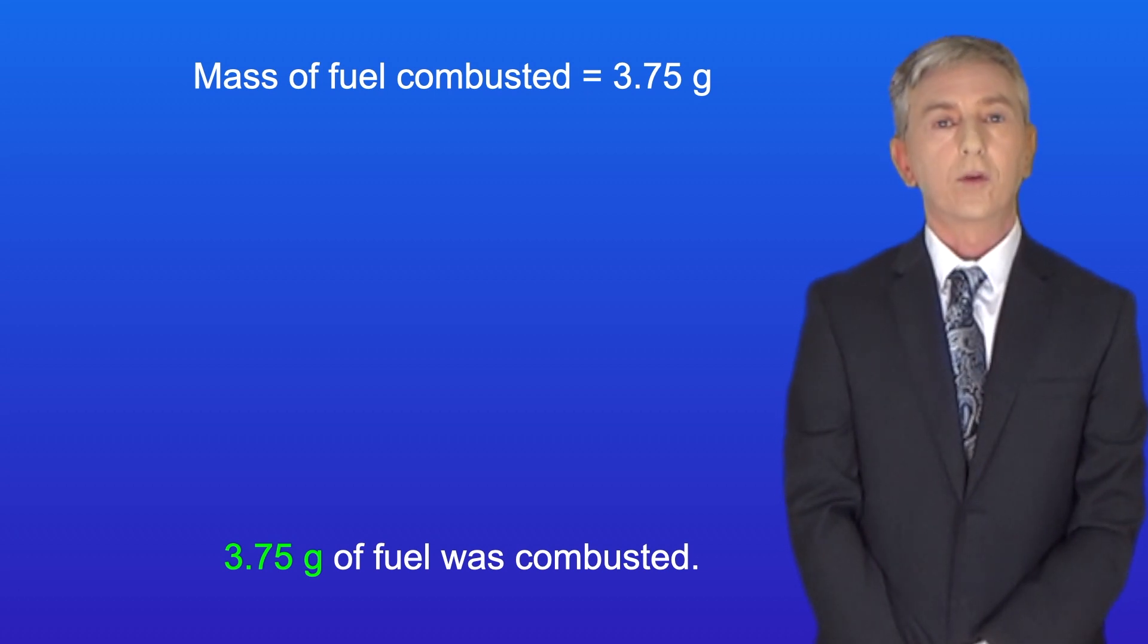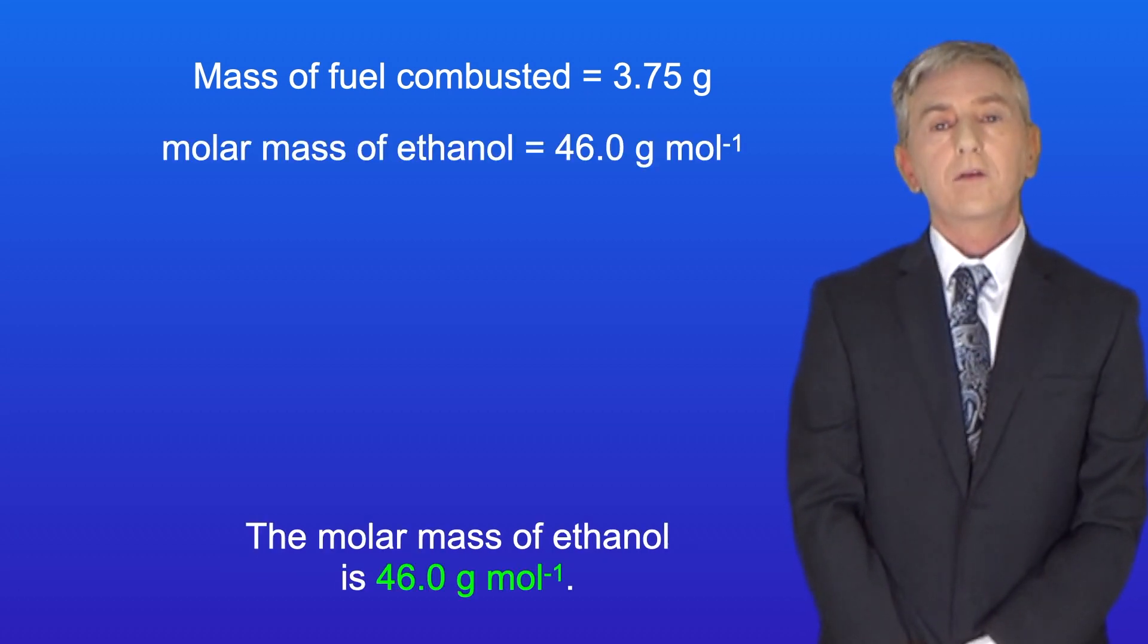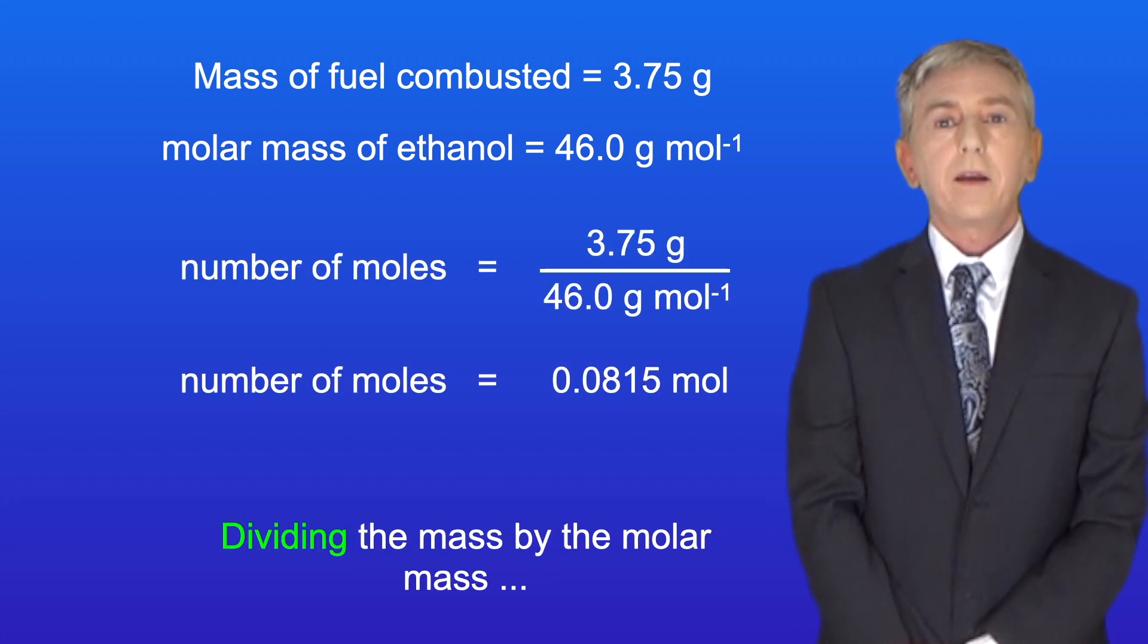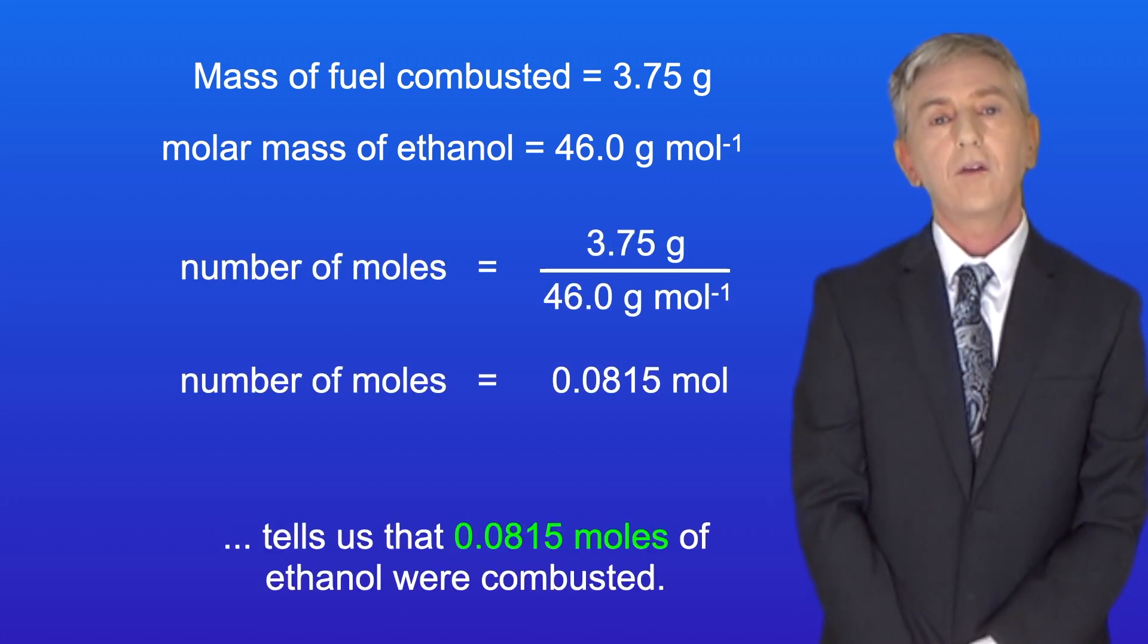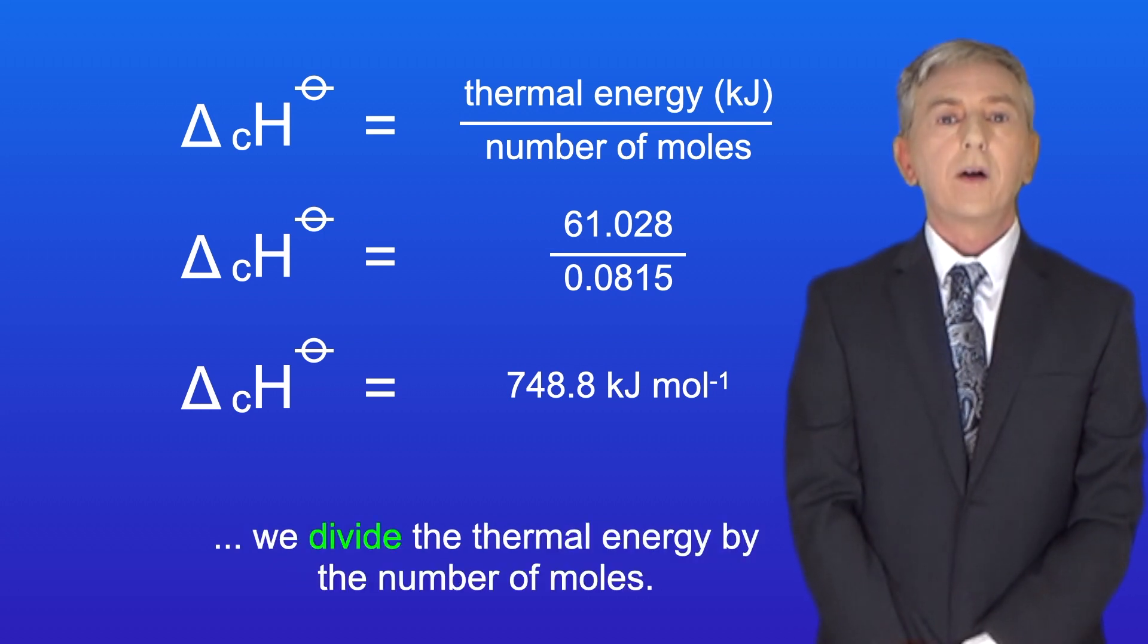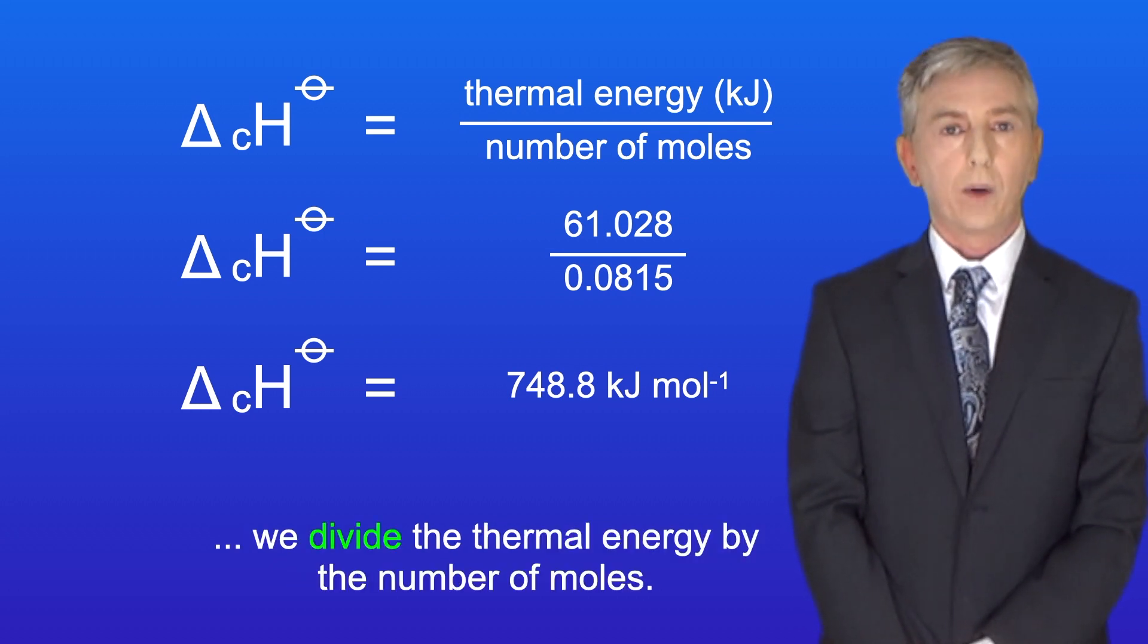3.75 grams of fuel was combusted and the molar mass of ethanol is 46.0 grams per mole. Dividing the mass by the molar mass tells us that 0.0815 moles of ethanol were combusted. To calculate the standard enthalpy change of combustion, we divide the thermal energy by the number of moles.